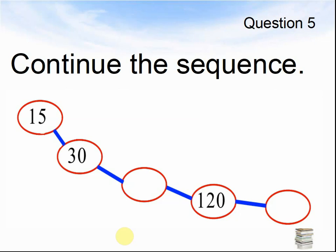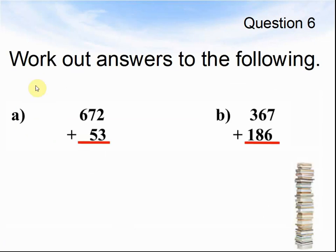Here comes question 6. Work out the answers to the following. 672 plus 53 equals what? And B, 367 plus 186 equals what? Work out the answers. Pause the video until you are ready for question 7.